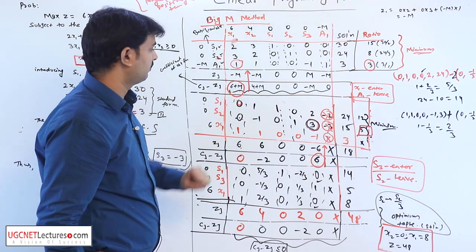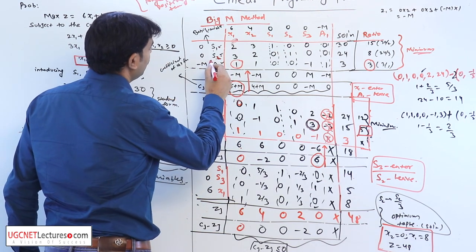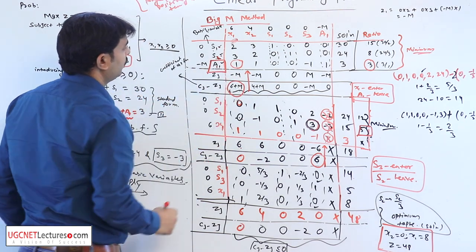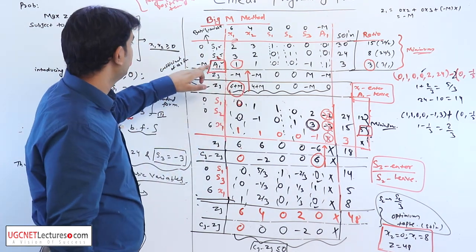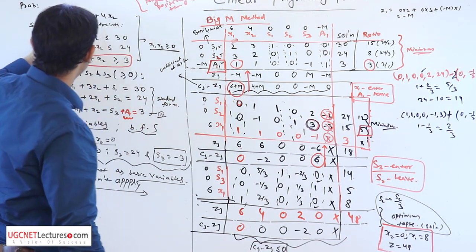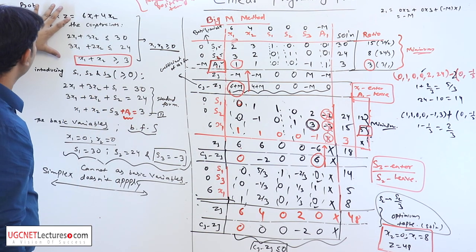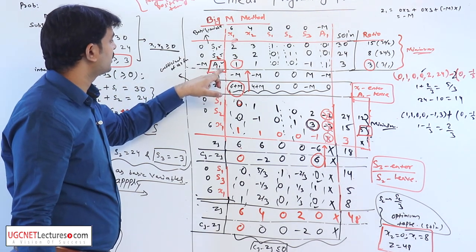So our aim is to remove artificial variable from the simplex table because it is our additional constant. This is not even introduced in the problem; it is our additional constant.